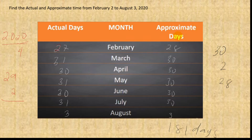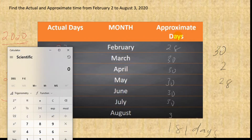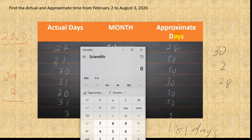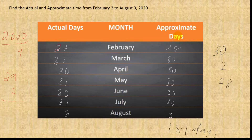Now for actual days, let's use a calculator to be sure. Adding: 27 (February) + 31 (March) + 30 (April) + 31 (May) + 30 (June) + 31 (July) + 3 (August) equals 183 days actual time. So 183 days is the actual time and 181 days is the approximate time.